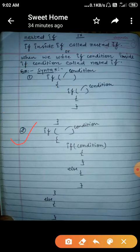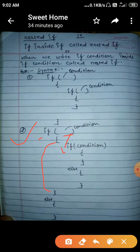You can see another example — if inside if with else. Here, you write the condition in the outer if. Suppose this condition is true, then the cursor will come inside and this part will be executed. Inside, there is another if with its own condition.